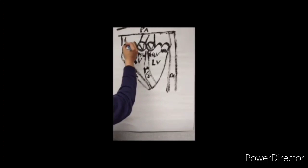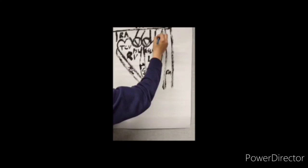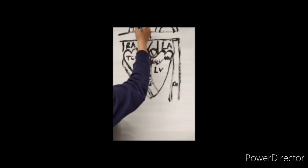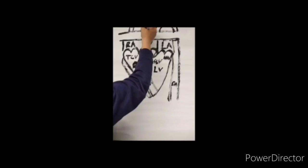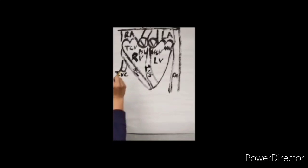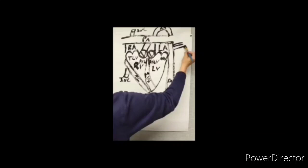Now we're going to draw the atriums. This is the right atrium. This is the left atrium. Now we're going to draw the superior vena cava. And the inferior vena cava. And it looks like a straw. Now we're going to add the pulmonary veins.